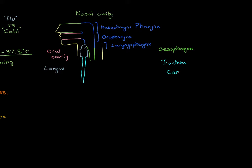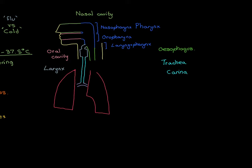Here is the trachea in aquamarine. At the bottom, the trachea bifurcates at the carina, giving rise to the two major bronchi - the right bronchus and the left bronchus in purple. These are the beginning of the airways of the lungs. Now I'll draw the two lungs in red: the right lung has a simpler shape, while the left lung has the cardiac notch - the space for the heart.